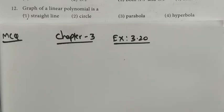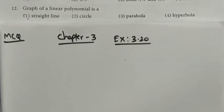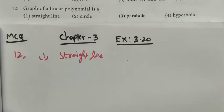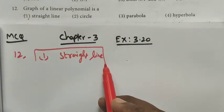Class 10, Chapter 3, Exercise 3.20, MCQ question number 12: the graph of a linear polynomial. We know that a linear equation means it must always be a straight line. So a linear polynomial gives a straight line as the answer. If it were quadratic, we would get a parabola. So option one, a straight line, is correct.